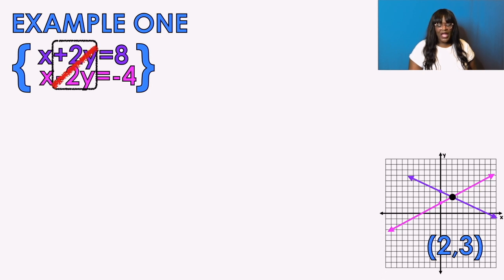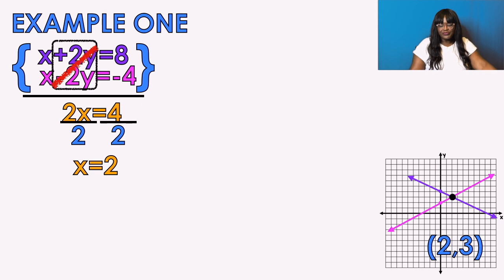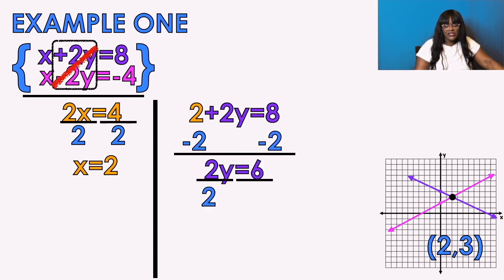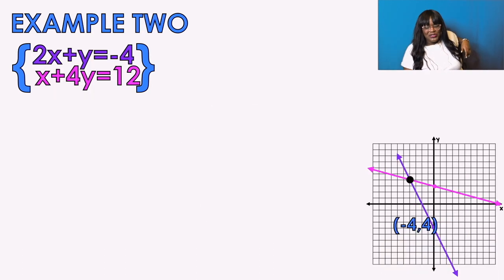I'm going to add the equations down — top plus bottom. The y's simplify out because one is positive and one is negative. So I add purple x plus pink x to get 2x, and 8 minus 4 gives me positive 4. I divide by 2: x equals 2. Then I plug 2 into the purple equation, get y by itself, divide by 2, and y equals 3. That matches our graph.